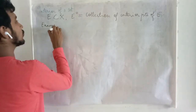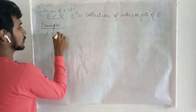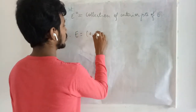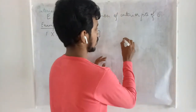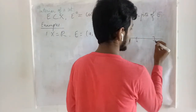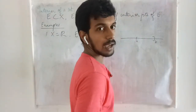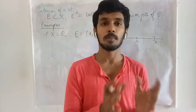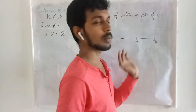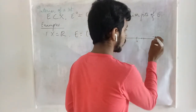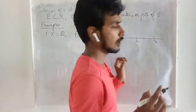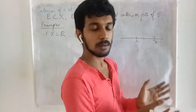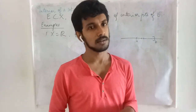Let us see some examples of interior of a set. Starting with a classical example: the real line under the standard Euclidean metric, and let us take the set to be a half-open interval. Suppose I take any point inside this interval; I can identify some neighborhood — an open interval or segment — which is completely contained in this set. So this point is an interior point. Even for a point very close to endpoint A, I can find a very small neighborhood completely contained in this interval.